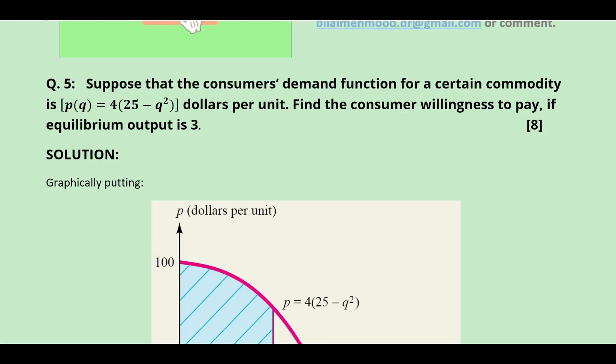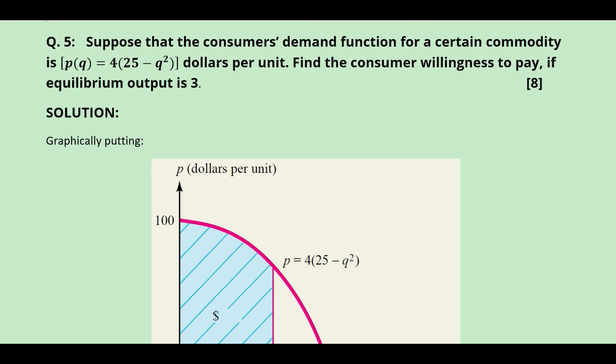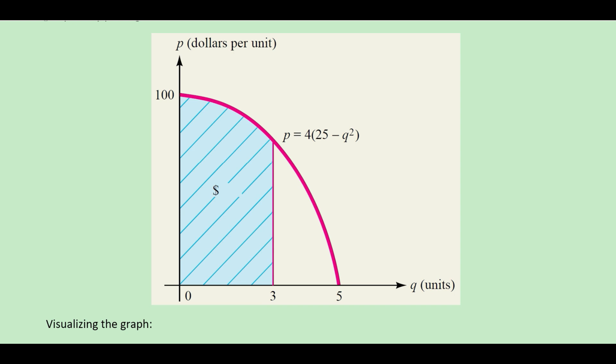The final question gives the consumer's demand function and requires finding the consumer's willingness to pay — not consumer surplus. The equilibrium output is 3, plotted on the diagram. The inverse demand function is quadratic with a negative sign on the quadratic term, making it a downward-opening (sad) parabola. Since it's a demand function, it remains in the first quadrant with positive price and positive output.